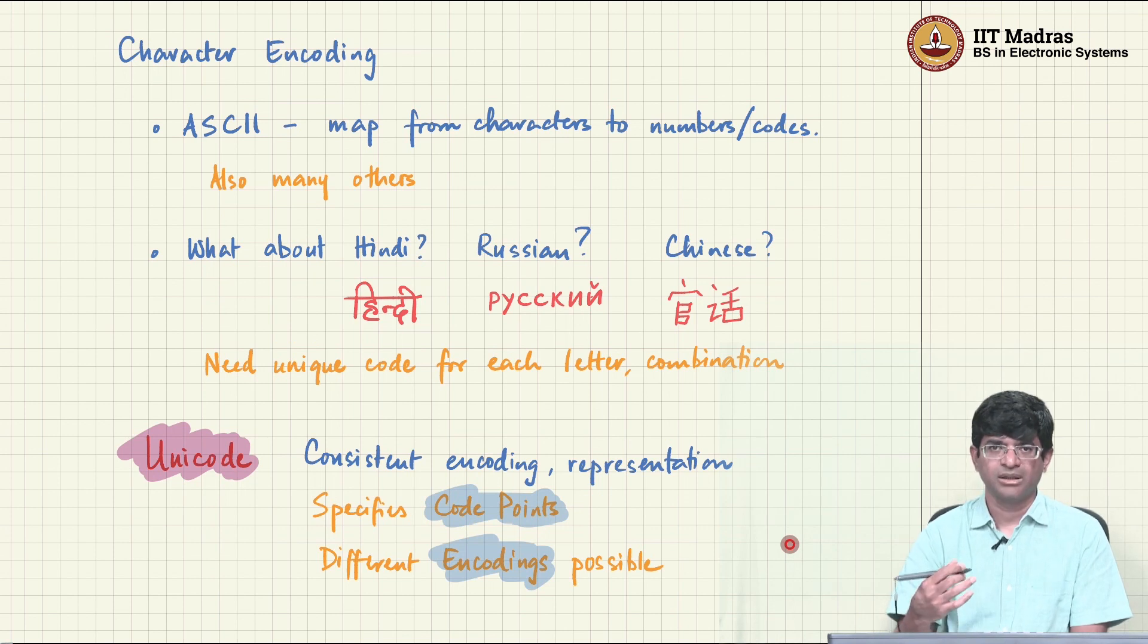There have been solutions proposed for how we are supposed to handle each and every one of these scenarios, and the approach that it takes is that all of these different alphabets or characters or whatever are represented by something called code points. And Unicode essentially specifies the code points.